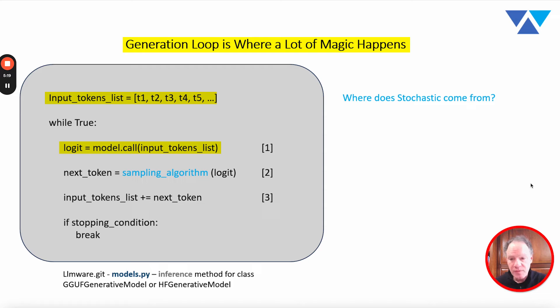And at its core, the output that's going to come from the model is this logit, this 32,000 by one vector or tensor that represents the probability distribution of what that next token is given that input list. That's step one.